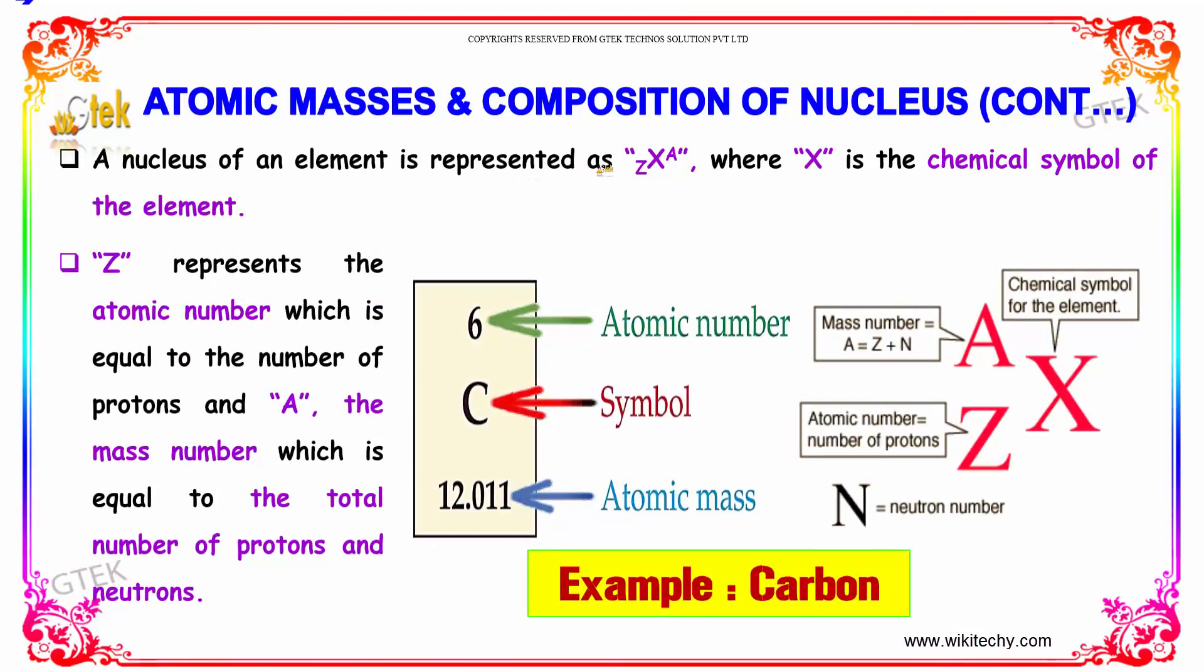A nucleus of an element is represented as Z-X-A, where X is the chemical symbol of the element. Z represents the atomic number, which is equal to the number of protons, and A is the mass number, which is equal to the total number of protons and neutrons.